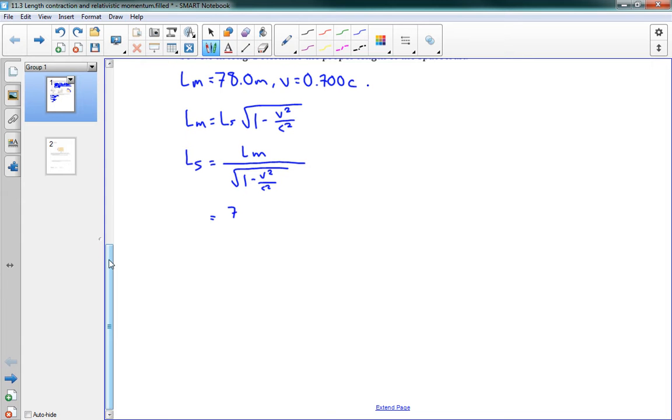We can plug in some numbers now. We have 78.0 divided by square root 1 minus 0.700c squared over C squared. Our C squareds are going to cancel out. So we get 78.0 divided by the square root of 1 minus 0.7 squared, which is 0.49. And we get a result of 109 meters. That's how that sort of a problem looks.